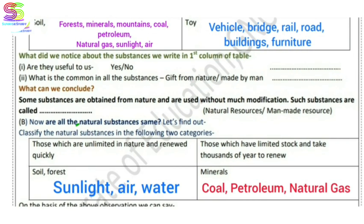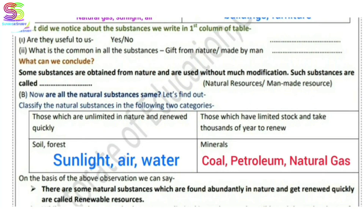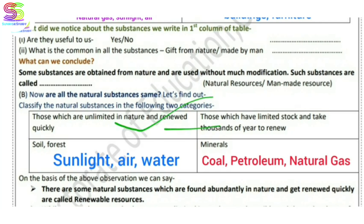Now let's find out — are all natural substances the same? No, they are not all the same. Natural substances can be classified into two categories: one is renewable and the other is non-renewable.